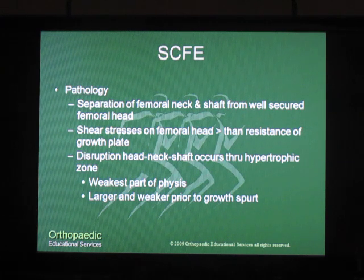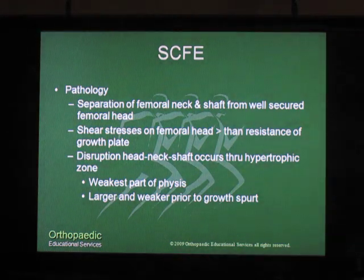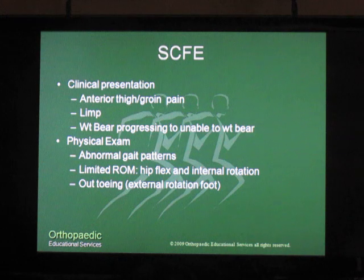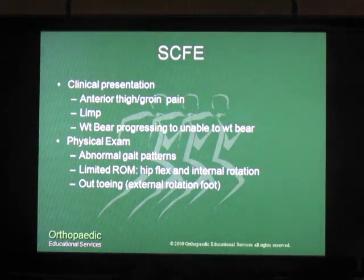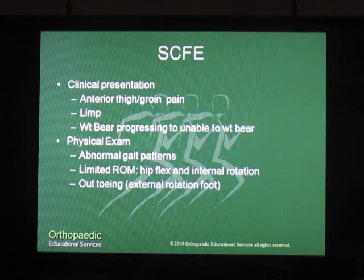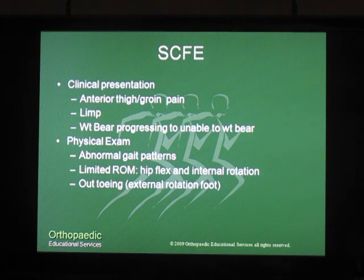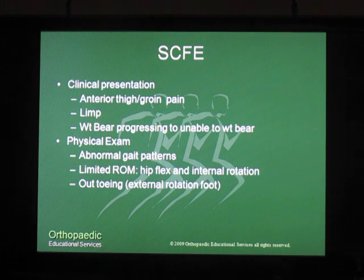This occurs because of a separation between the femoral neck and shaft in relationship to the secure femoral head. Clinical presentation: most of these patients will present with anterior thigh or groin pain. They will have a limp and at some point will report being able to weight bear, but progress to being unable to weight bear because of their pain. On physical examination you'll notice a gait abnormality such as a limp, range of motion limitations in hip flexion and internal rotation, and often when they lay supine on the examining table their foot will externally rotate.